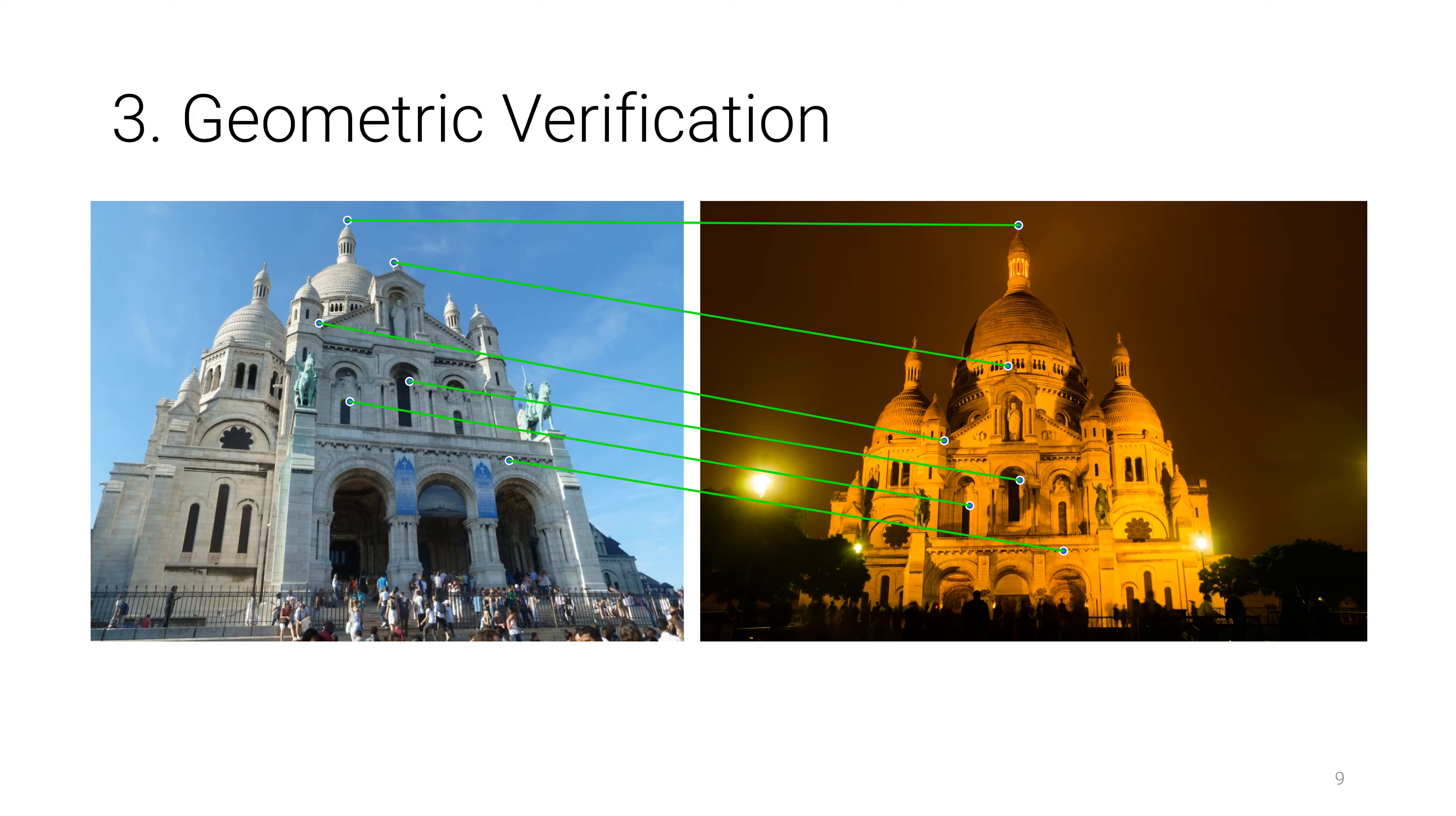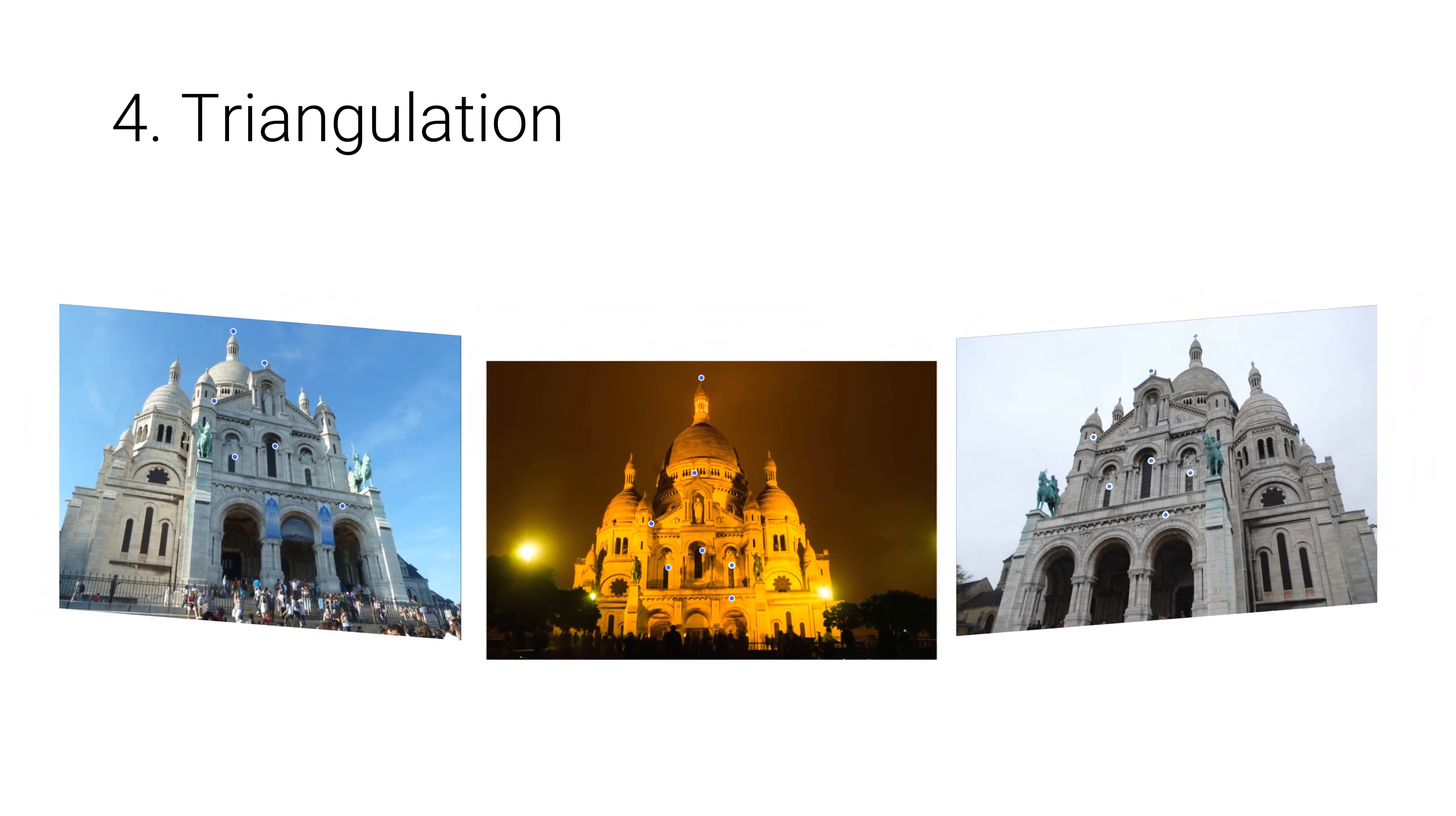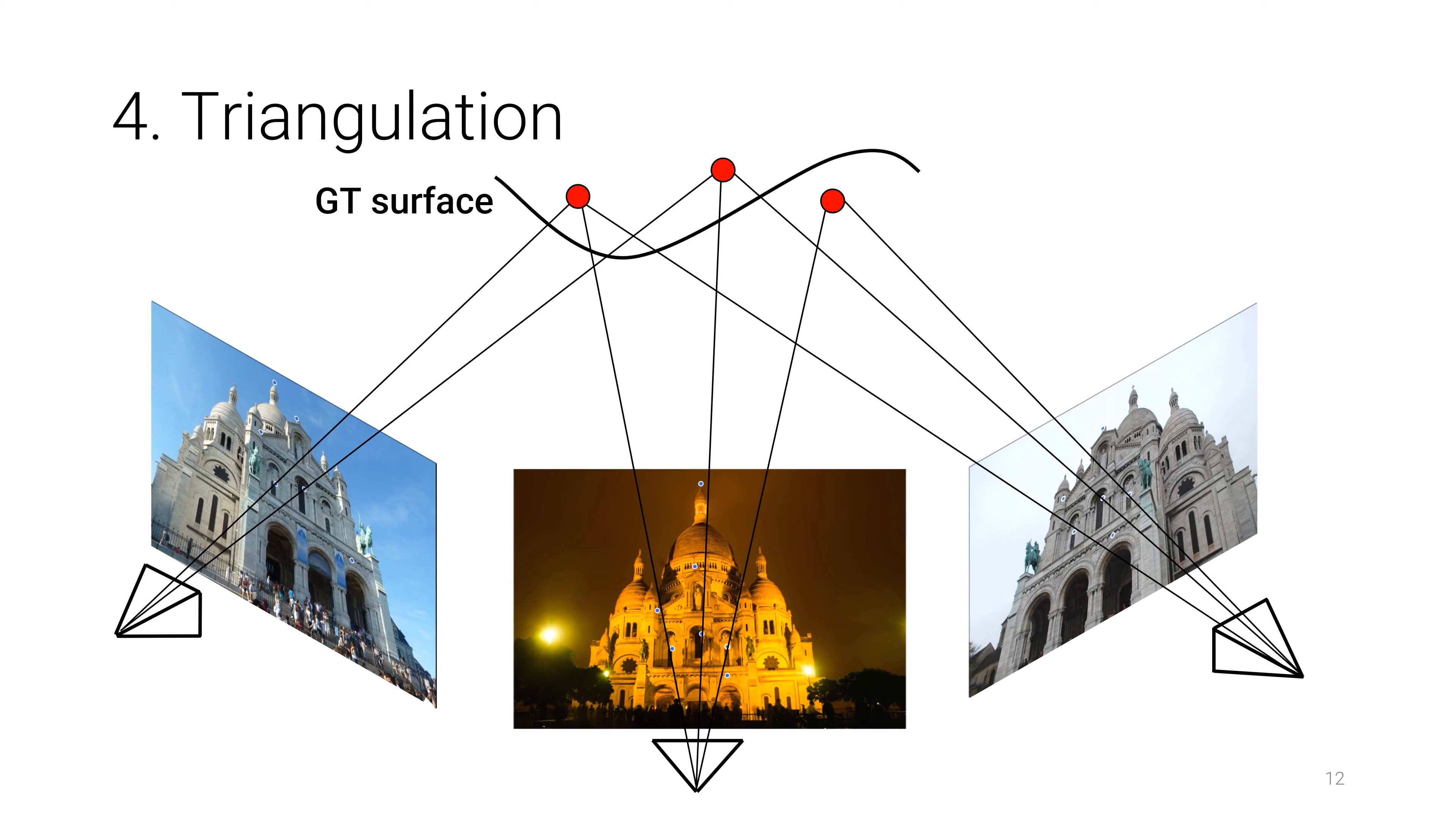The matches graph can be constructed by matching other images in the scene, and matches across multiple views are called tracks. In the next step, tracks are triangulated to obtain 3D points, and this process is repeated for each track in the matches graph.